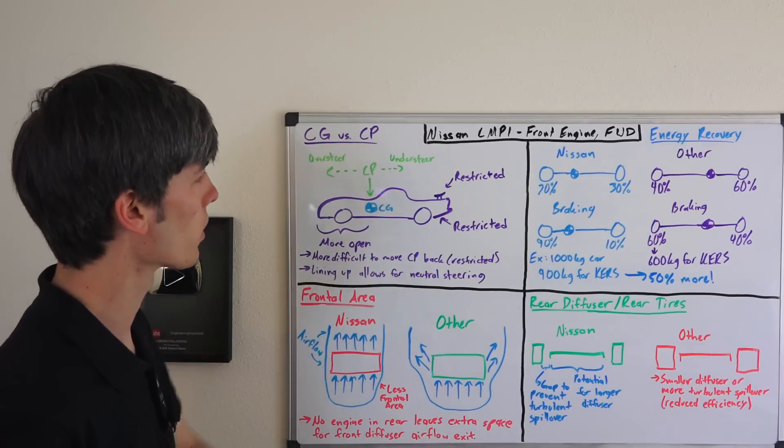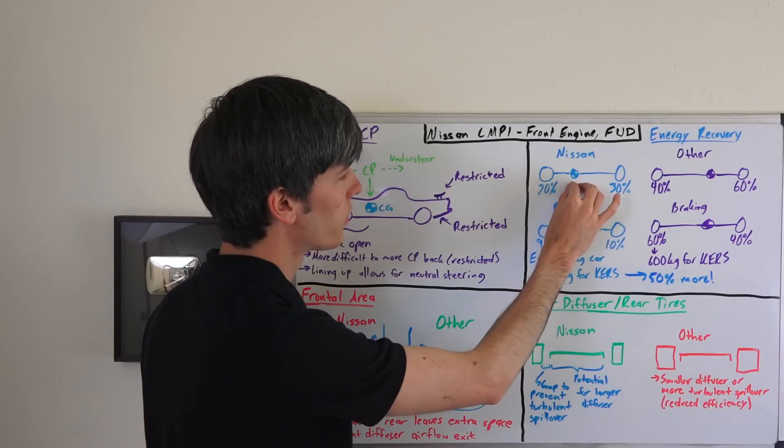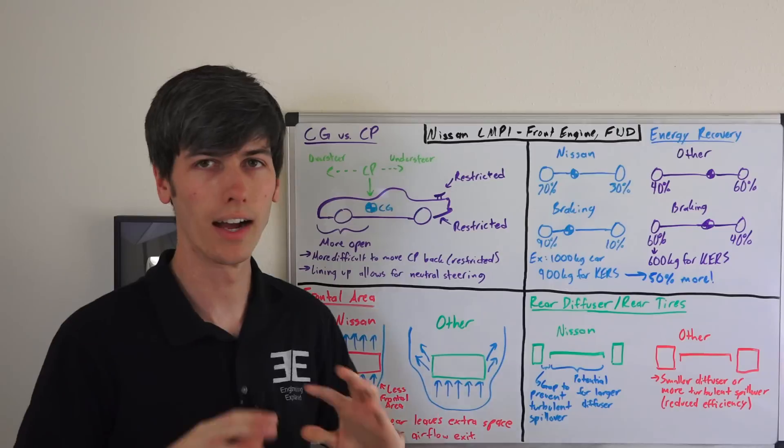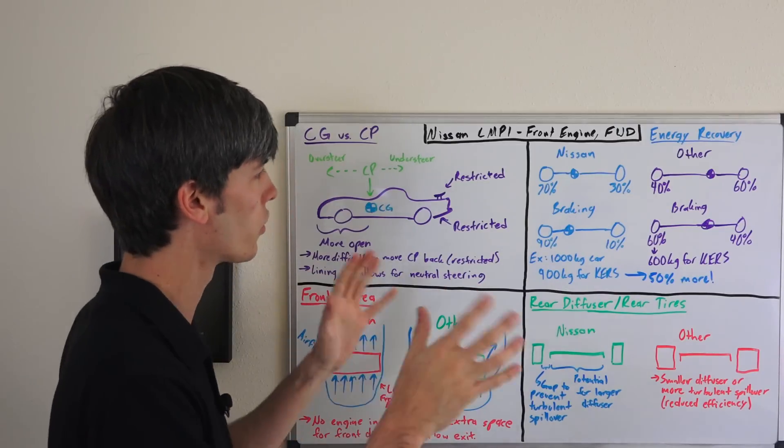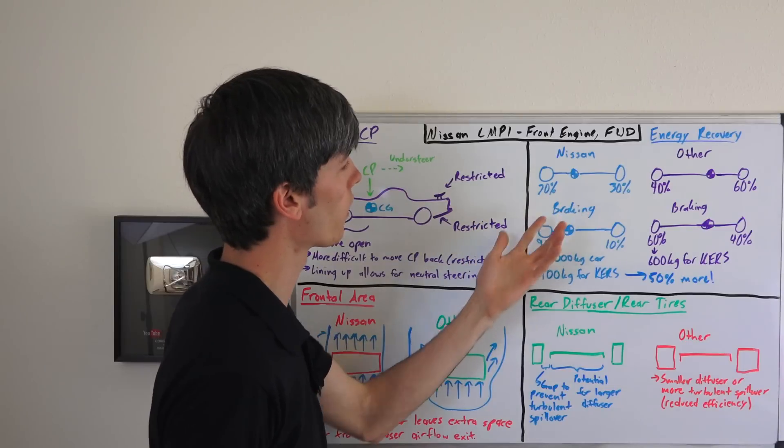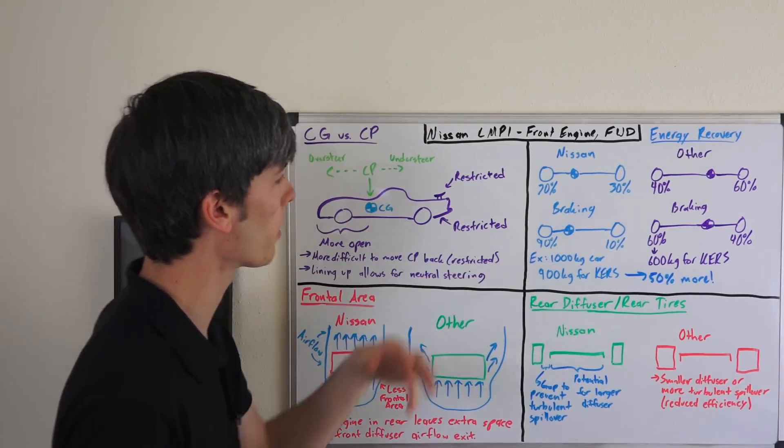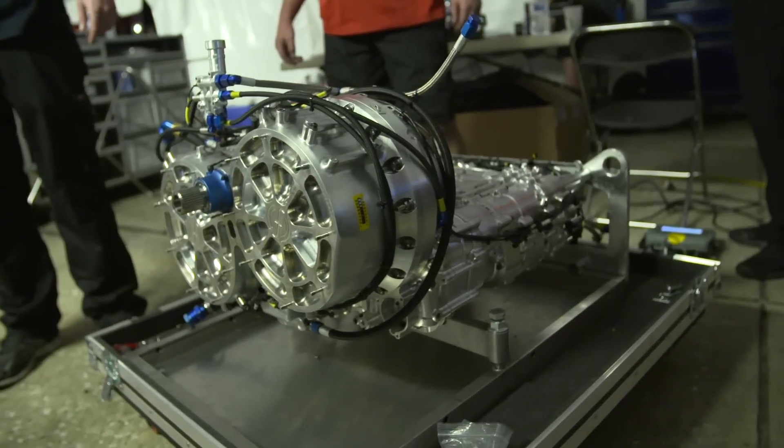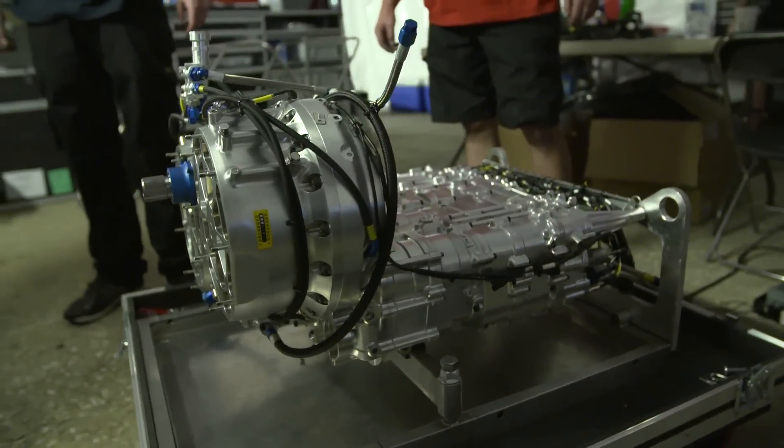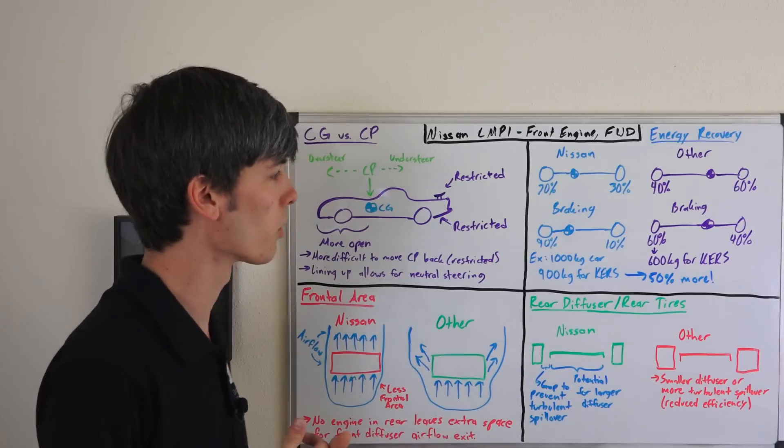The other thing is energy recovery. Because they have the center of gravity closer to the front, let's just say it's a 70-30 split weight distribution, not that this is coming from Nissan, this is just a guess. And let's say under braking, 20% of the load transfers to the front, so it's a 90-10 split, so 90% of the braking done by these front tires. Well, if the front wheels are the ones that have the kinetic energy recovery system hooked up, they're going to be getting 90% of that load, 90% of the weight of the car available for use in kinetic energy recovery.